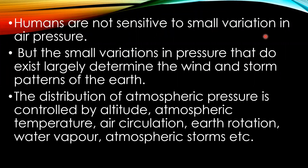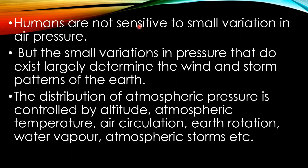Humans are not sensitive to small variations in air pressure, but these small variations largely determine the wind and storm patterns of the earth. The distribution of atmospheric pressure is controlled by altitude — when altitude increases, air is less dense and pressure is lower. It is also controlled by atmospheric temperature, which determines the density of air and naturally the pressure. Other factors include air circulation, earth's rotation, water vapor, and atmospheric storms.